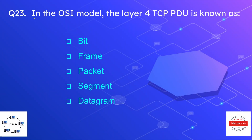Question number twenty-three is: in the OSI model, the layer four TCP PDU is known as — bit, frame, packet, segment, or data? The correct answer is segment. The layer four TCP data unit is known as the segment.